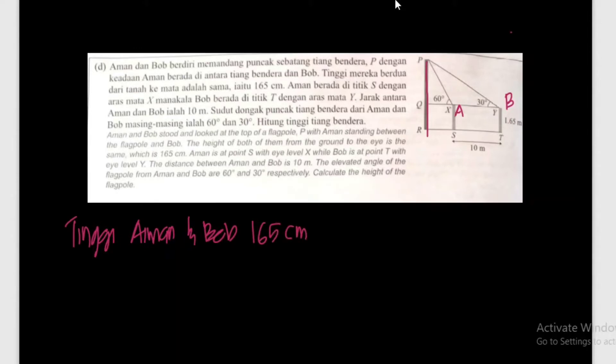Aiman dan Bob, tinggi dia sama, satu enam lima sentimeter. Aiman berada di titik S dengan aras mata X, manakala Bob berada di titik T dengan aras mata Y. Jarak antara Aiman dan Bob ialah 10 meter.